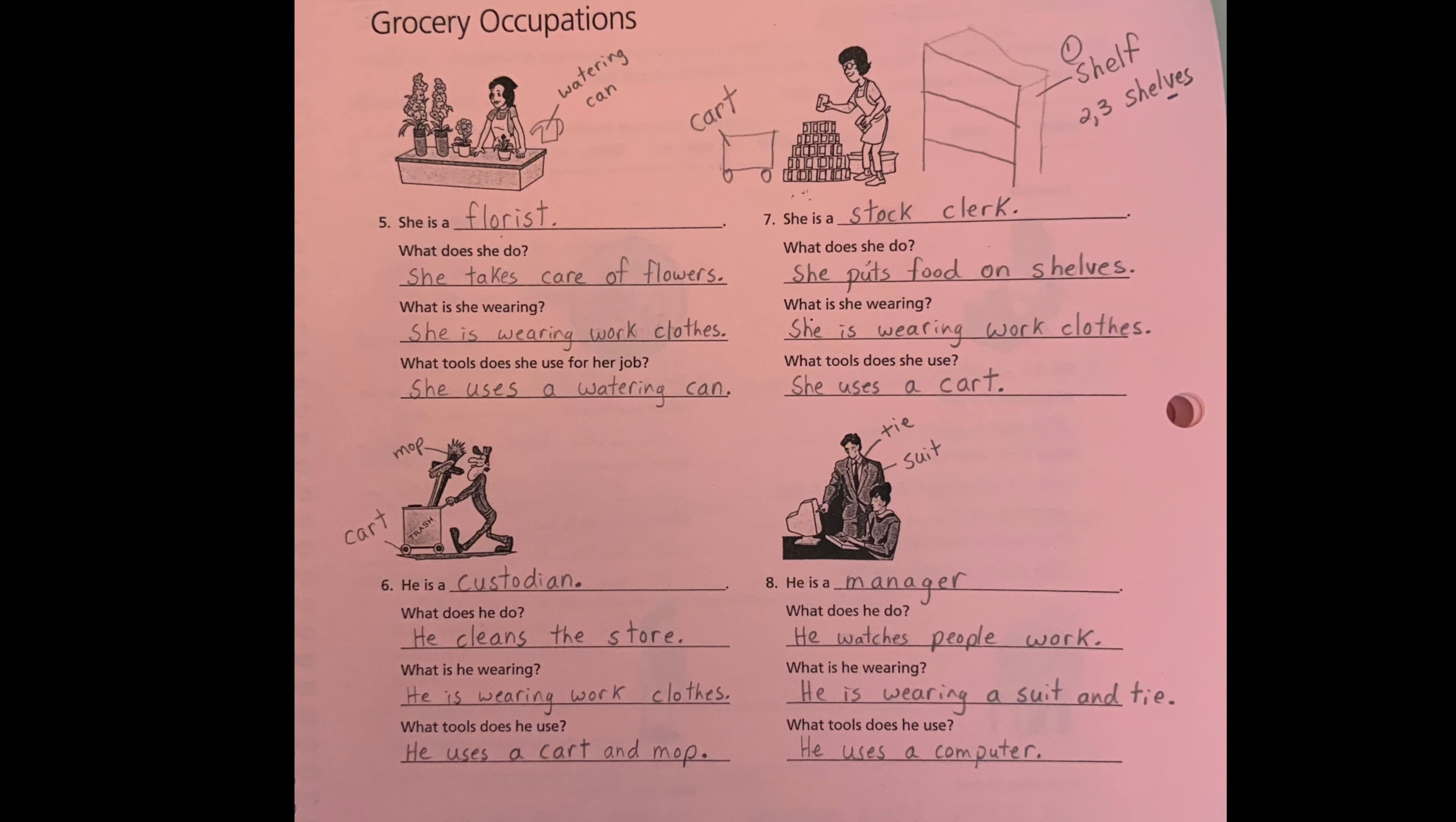Number six. He is a custodian. What does he do? He cleans the store. What is he wearing? He is wearing work clothes. What tools does he use? He uses a cart. This is a cart, C-A-R-T, and mop.